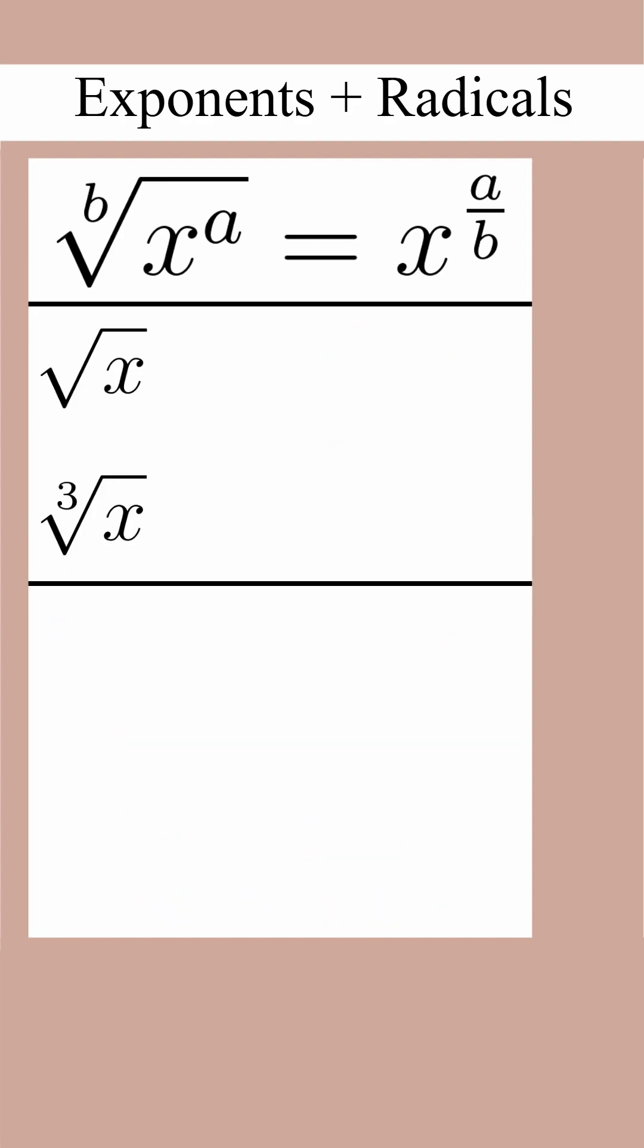For these examples, we'll first rewrite them, remembering that the implied exponent is 1 and that the implied radical index is 2. Now we can use power over root to rewrite them as x to the 1 half and x to the 1 third respectively.